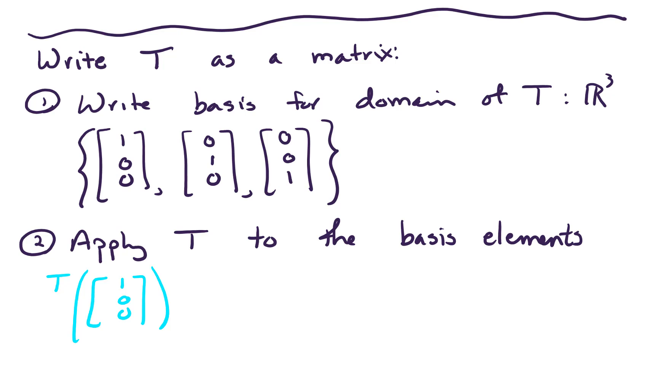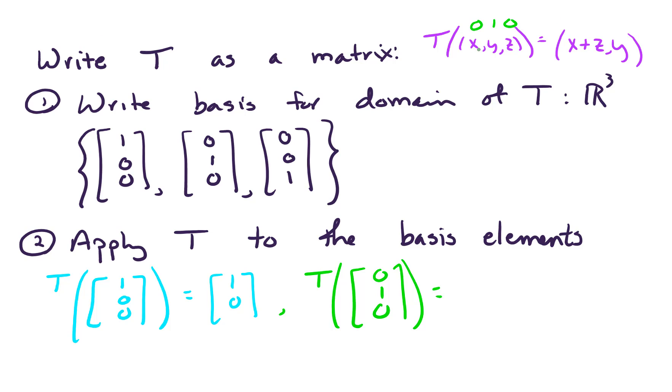Let's do that. The first application, T of (1,0,0). Let's remind ourselves what T does: T is a map that takes in vectors (x,y,z) and spits out vectors that look like (x+z, y). So if we're putting in (1,0,0), we get out 1 plus 0 comma 0, so we get out (1,0). Then the next application to basis element (0,1,0), now x is 0, y is 1, so we get 0 plus 0 and 1. That gives us (0,1). Lastly, T applied to (0,0,1). If we put those values in, we get (1,0).